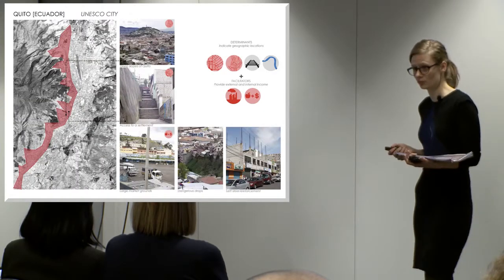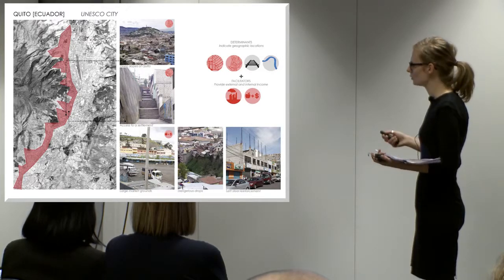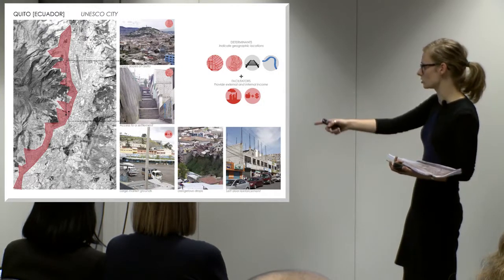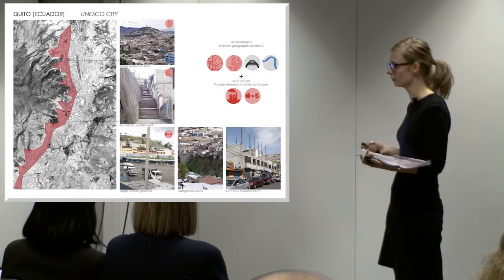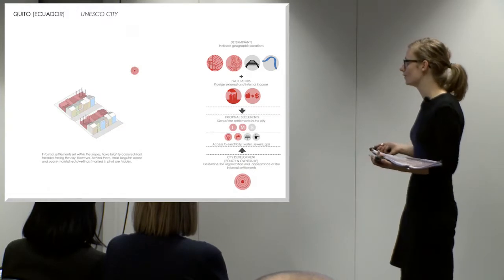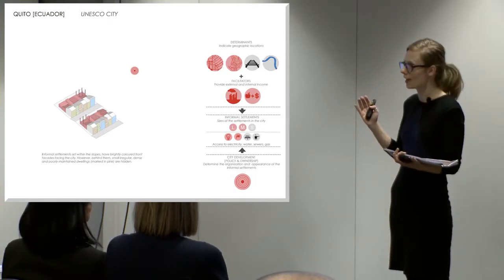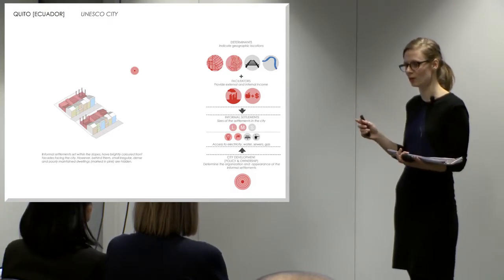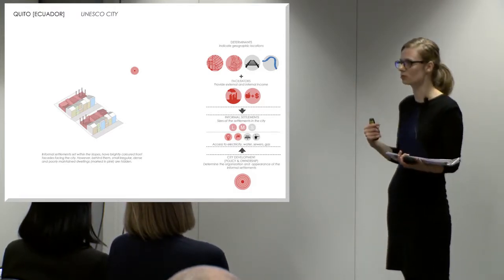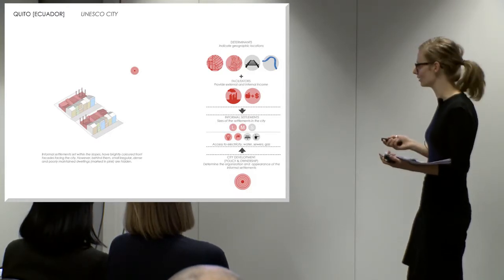The next city was Quito. In many ways it's very similar to La Paz — it has extreme topography and huge slopes everywhere, very hard to walk around. On one edge, it has a massive informal settlement on a steep hill, very hard to access. What is interesting about Quito is that once you are in the lower areas and look up the hills, everything looks really colorful and pretty because all the facades are painted in many colors. But only once you get up and go behind these dwellings do you realize what poor and crumbling condition they are in — a way of hiding it, almost.